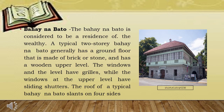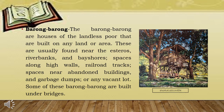Bahay na Bato. The Bahay na Bato is considered to be a residence of the wealthy. A typical two-story Bahay na Bato generally has a ground floor made of brick or stone and a wooden upper level. The windows at the lower level have grills while the windows at the upper level have sliding shutters. The roof of a typical Bahay na Bato slopes on four sides. Barong-Barong. The Barong-Barong are houses of the landless poor built on any land or area. These are usually found near the esteros, river banks, and bay shores, spaces along high walls, railroad tracks, spaces near abandoned buildings, and garbage dumps or any vacant lot. Some of these Barong-Barong are built under bridges.